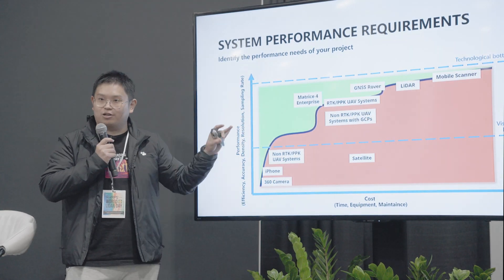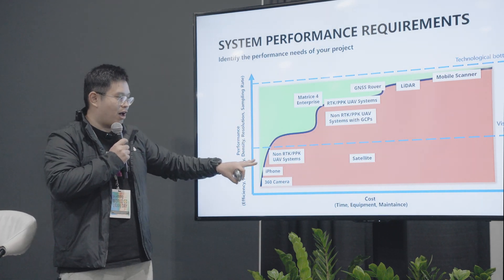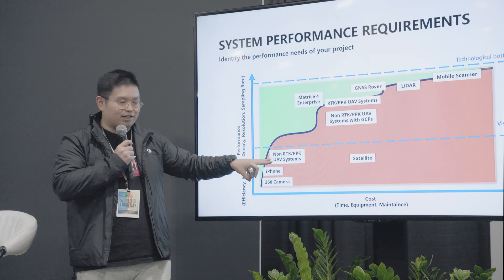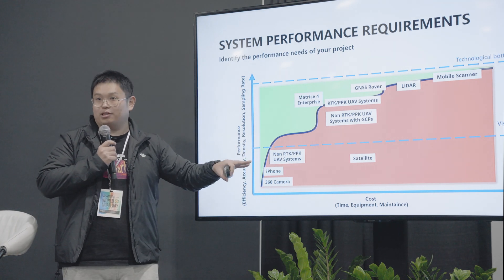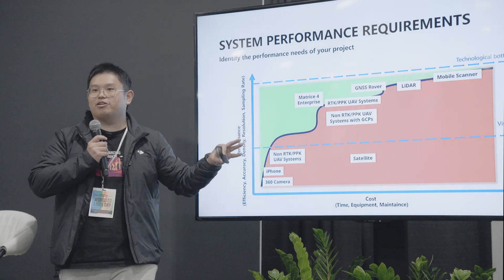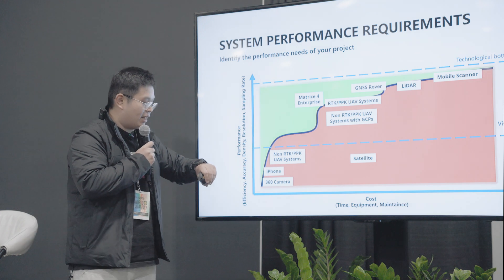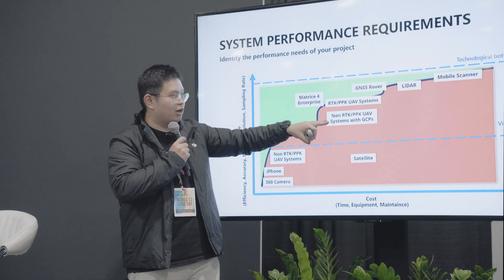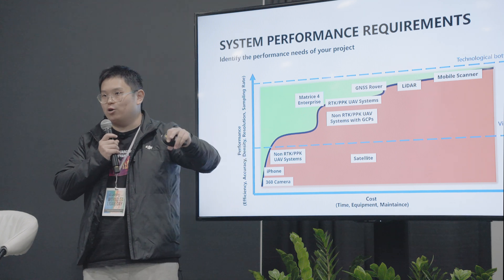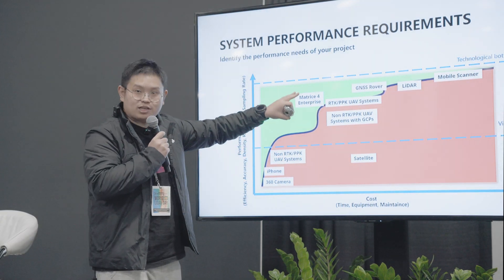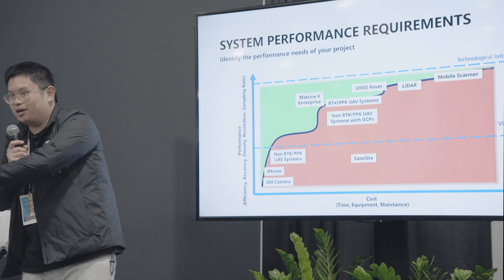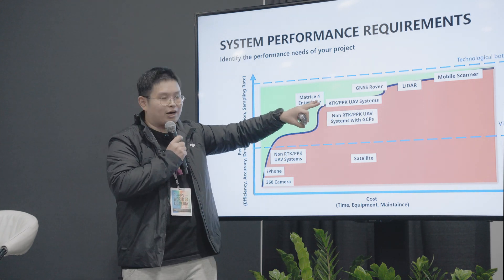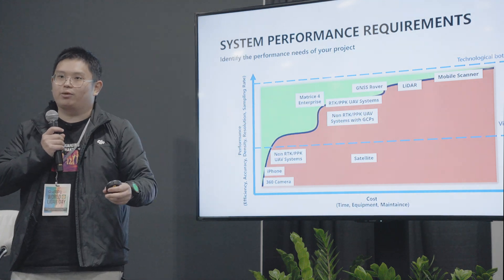We have these products overlaid on this map. A typical drone system that is not RTK or PPK capable sits here — not so accurate, but cheap, easy to fly, and extremely efficient for covering a good amount of area. Then we have RTK drones and non-RTK systems with GCPs which can also improve efficiency. This is where we place the latest Matrice 4 Enterprise on this chart — slightly better than the RTK drone but with lower cost in terms of training and maintenance.